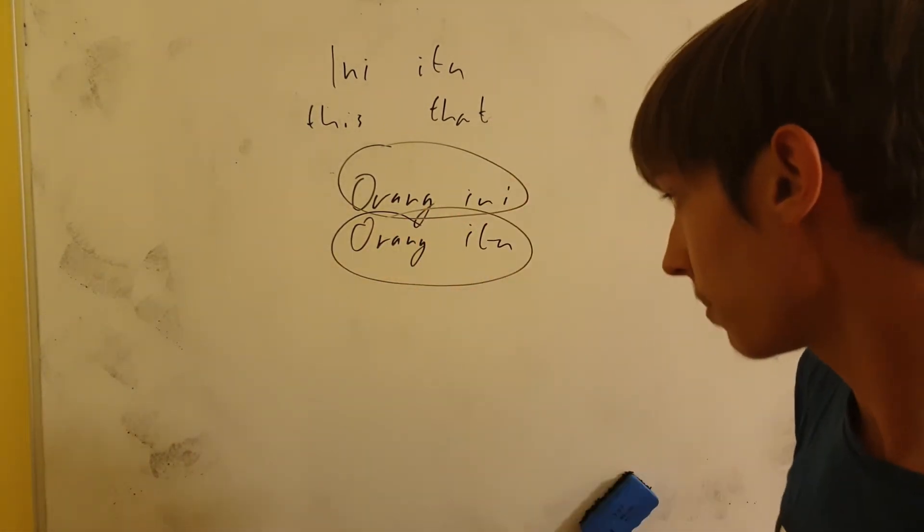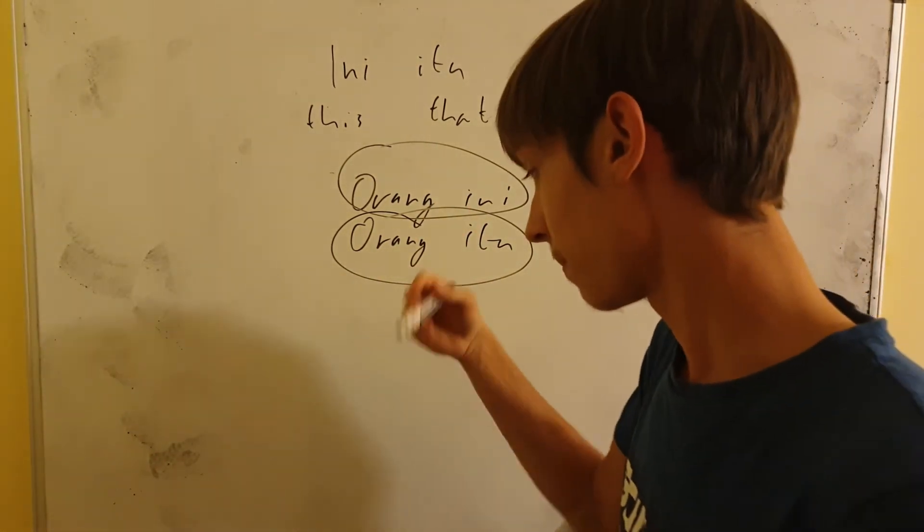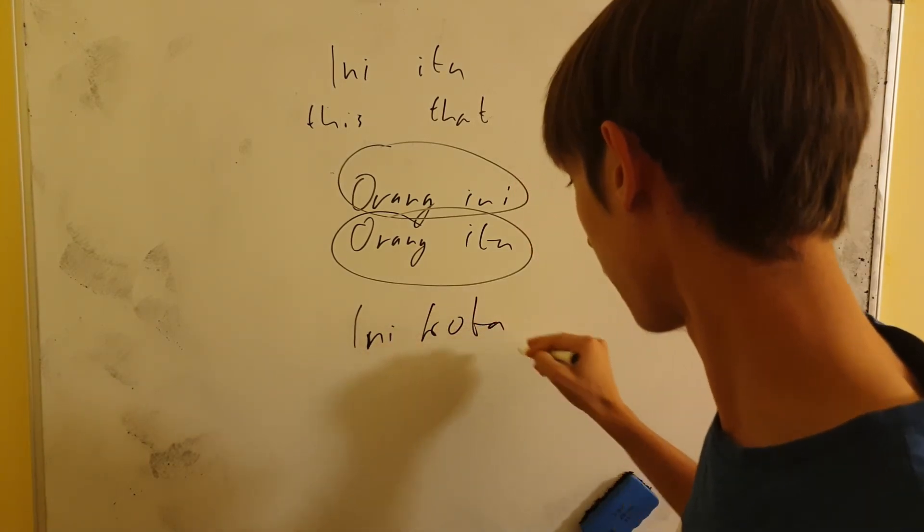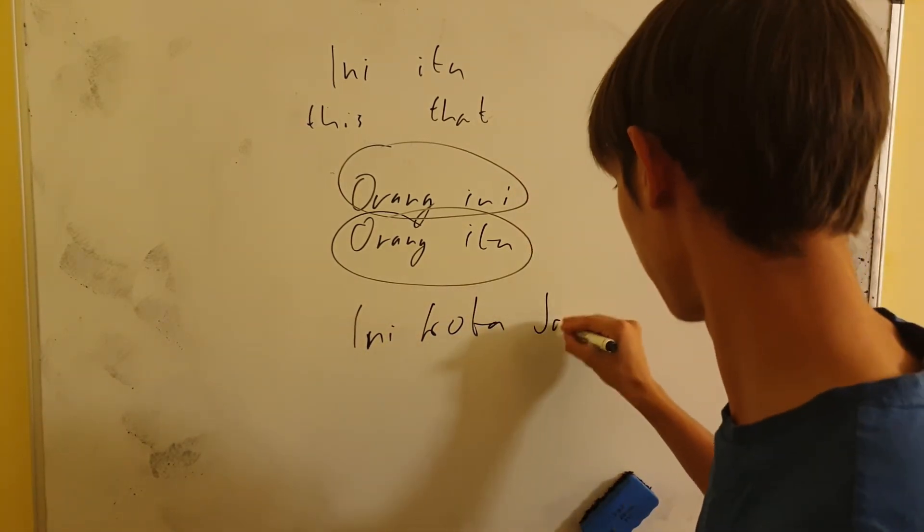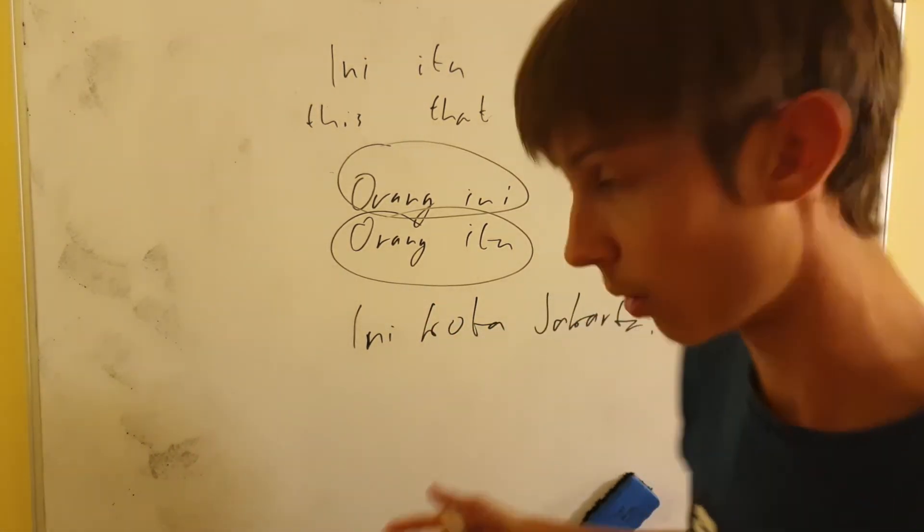Now, this is qualifying some other word, but we can also use it by itself, as I showed. So, for example, INI KOTA JAKARTA. INI KOTA JAKARTA. This is the city Jakarta.